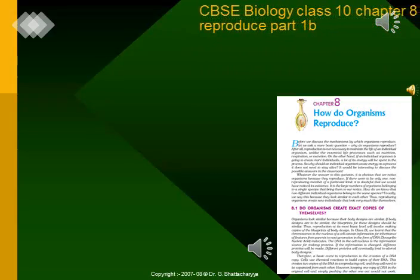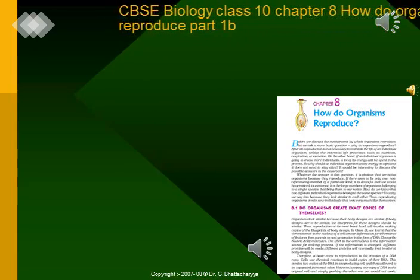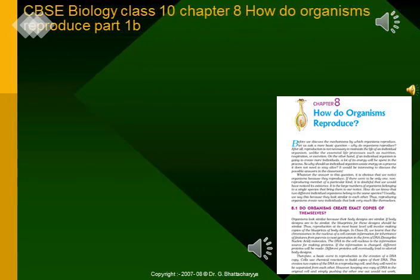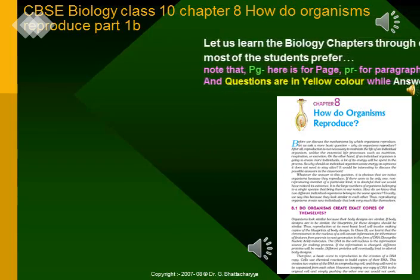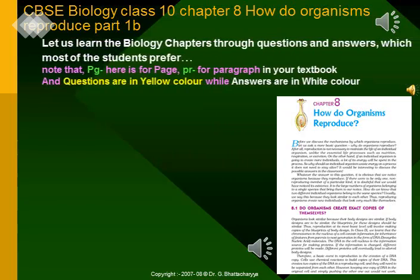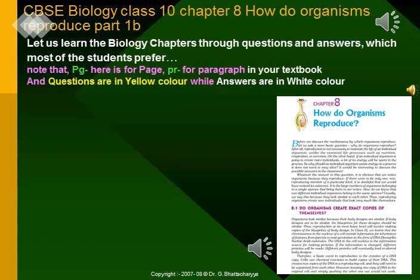CBSE Biology Class 10, Chapter 8: How do Organisms Reproduce, Part 1B. We will learn the biology chapters through questions and answers, which most students prefer. Note that PG here is for page, PR for paragraph in your textbook. Questions are given in yellow color while answers are in white color.